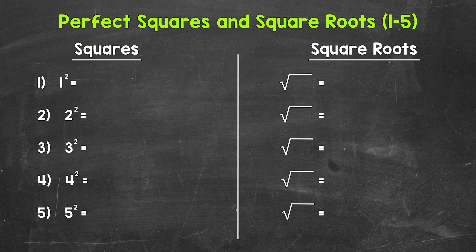Now remember, squaring a number means to multiply a number by itself. When it comes to square roots, square roots are the opposite, the inverse, of squaring a number. So we need to think: what number multiplied by itself will equal the number under the root symbol?